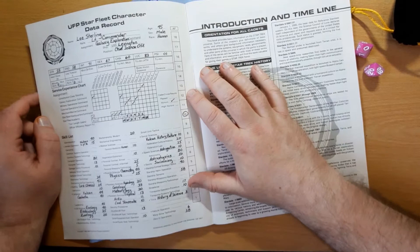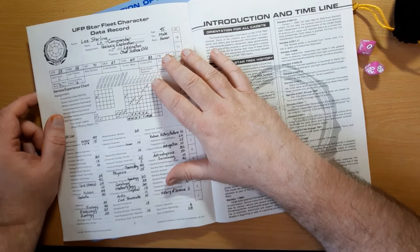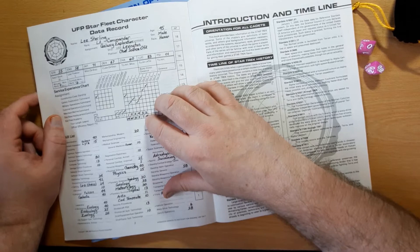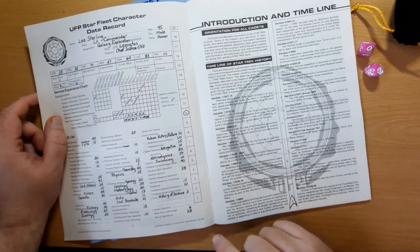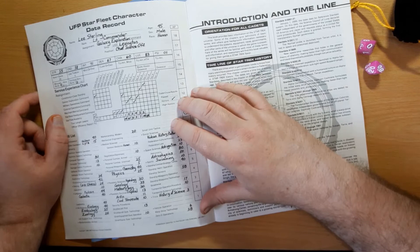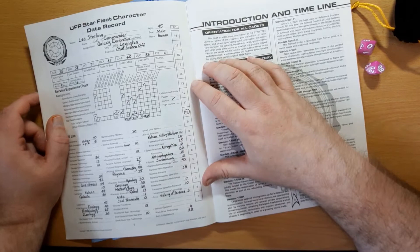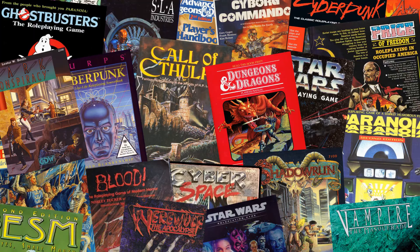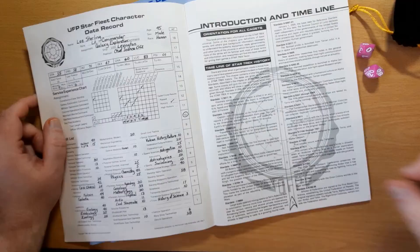Initiative in Star Trek role playing game goes by one of two methods. One, you make it up as you go along - players tend to go first and they decide within themselves who goes in what order. Or secondly, by dexterity, going from highest to lowest. And it recommends that if you can't decide what order people should be going if it's not obvious, you go by dexterity.